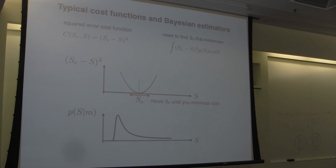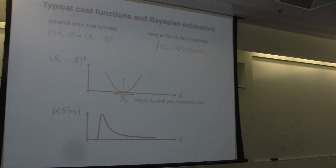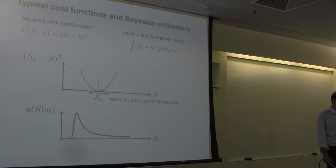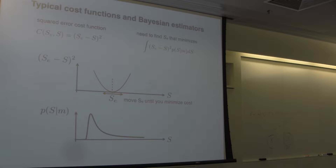Graphically, what does it mean? Let's think about a simple cost function. I'm going to consider a squared error cost function, meaning the subject penalizes itself by the square of its error: if I make a one degree error it's bad to some extent; if I make a four degree error it's 16 times worse. That's one possible cost function — very typical for Bayesian integration. Now, given this cost function I've plotted here — SE minus S squared, a quadratic function — and here is the posterior, the probability of S given M.